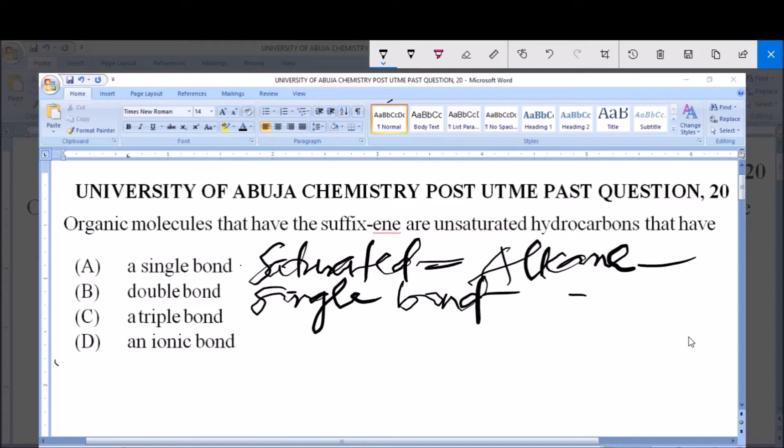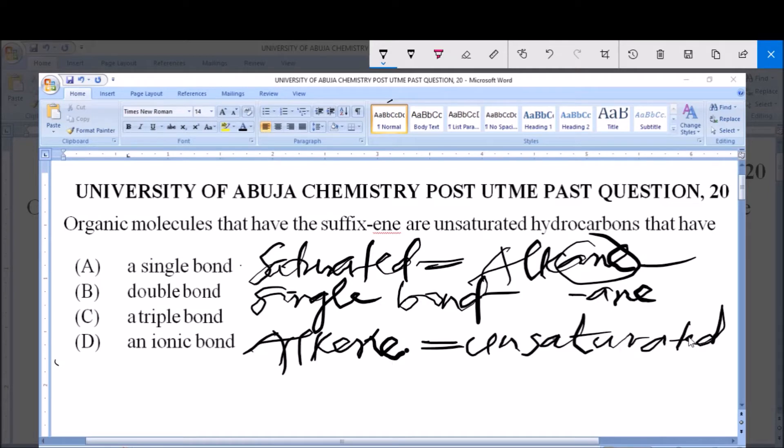Also, we have the alkene. This alkene is regarded as unsaturated. Alkene is unsaturated, it has a double bond, and the suffix is -ene. So alkane is -ane, alkene is -ene.